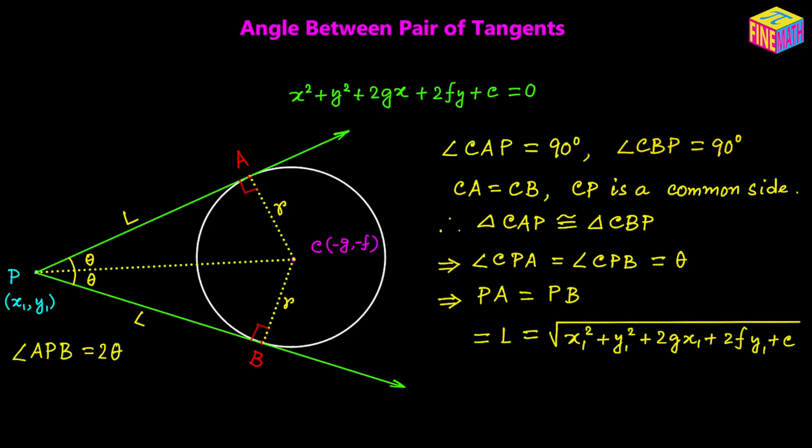Here x₁ and y₁ are the coordinates of the external point P, and G and F come from the equation of the given circle. The radius is equal to square root of G² plus F² minus C. So from the given information we can calculate the length of the tangent L and the radius R. For the right triangle CAP, tangent of theta equals R over L.